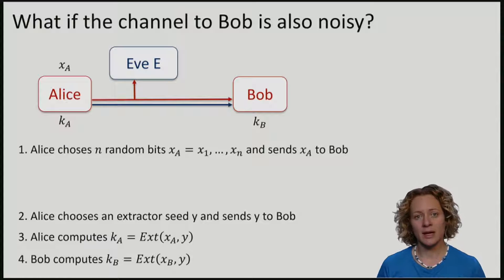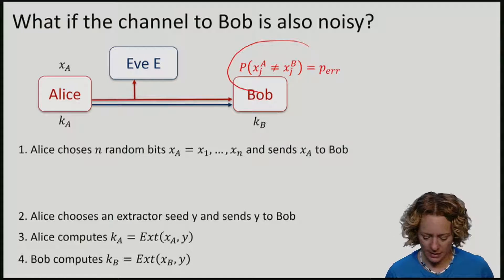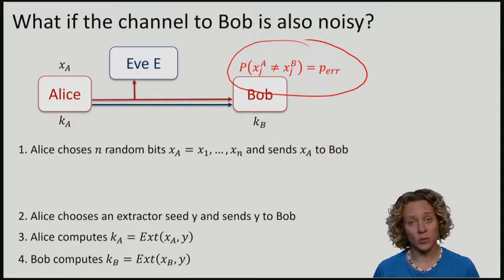In other words, he does not always receive the bits, but he receives a bit with an error. So there is some probability that the bits are different. Is it still possible to distribute keys in this scenario?